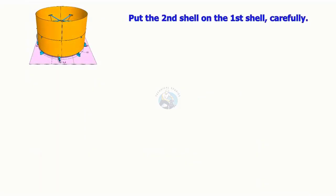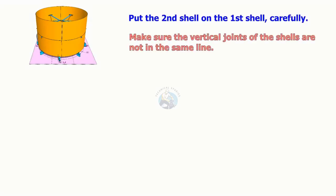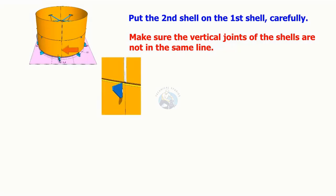Put the second shell on the first shell. Make sure the vertical joints are not on the same line and shall be according to the degree given in the drawing.